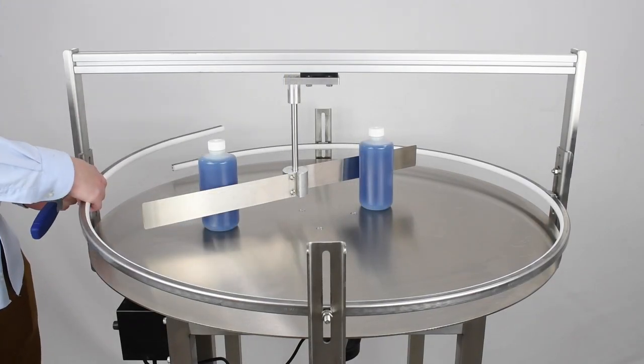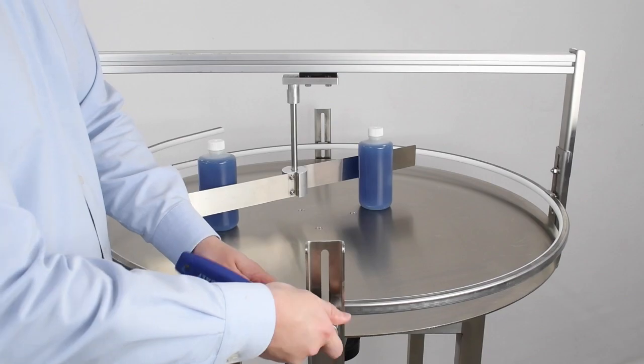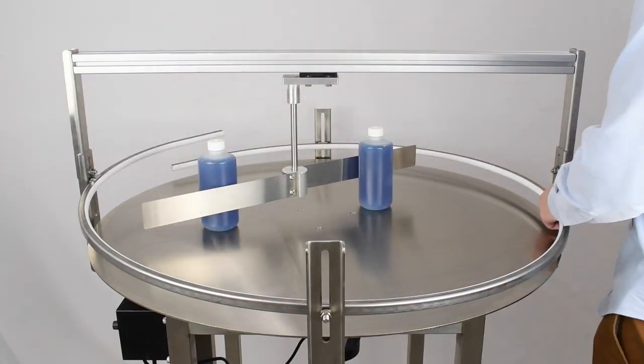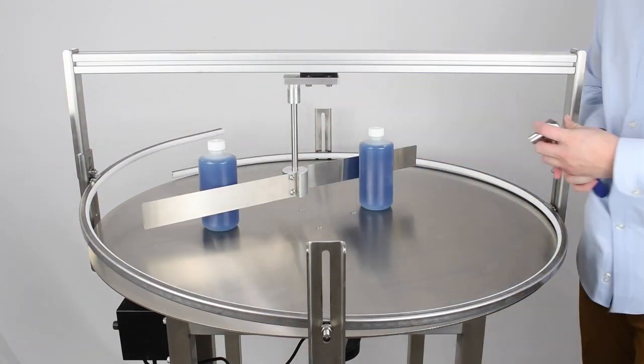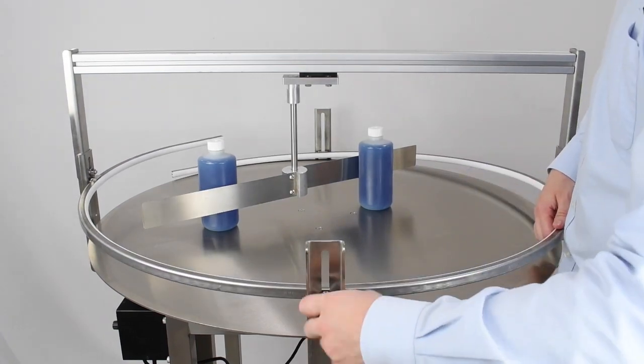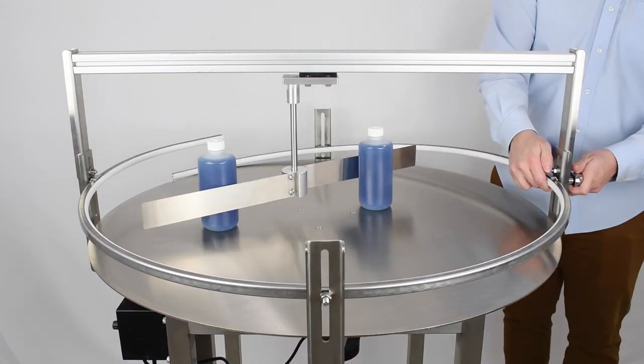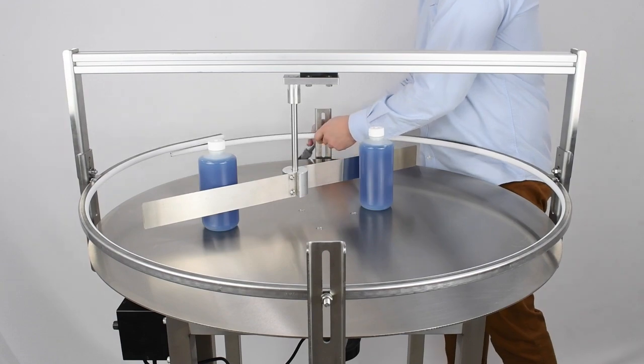Loosen the adjustment nuts on the accumulation guide rail using the half-inch socket. Raise or lower the guide rail depending on the container that will be moving through the accumulation table. Once the guide rail has been adjusted, tighten the adjustment nuts using the half-inch socket.